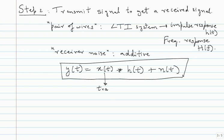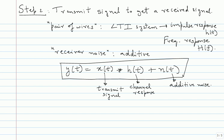Putting these two together, the model is: y(t) = x(t) * h(t) + n(t), where x(t) is the transmit signal, h(t) is the channel impulse response, and n(t) is additive receiver noise. This is a very powerful equation. It looks simple but it is very, very powerful — this will be our model for essentially the whole course.